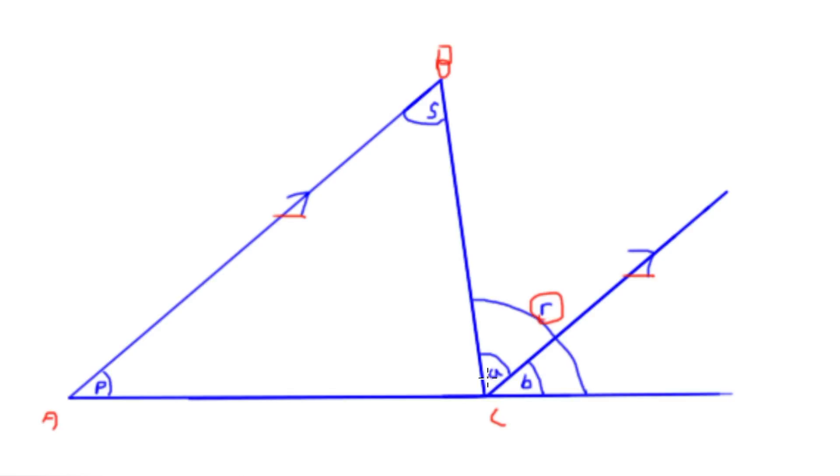Our angle R covers both A and B. Because we know angle P is the same as B, and S is the same as A, it follows that P plus S will also be equal to R.